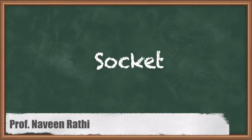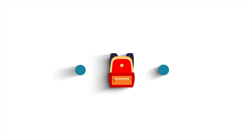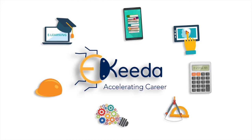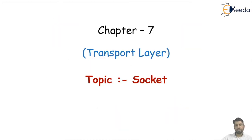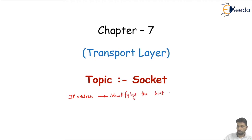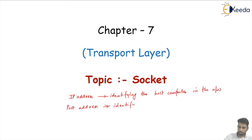Hello students. In chapter 7, transport layer, our topic is socket. In port addressing, we have the network layer address. The IP address is for identifying the host computer in the network, and the port address is used for identifying the process running in the computer.